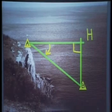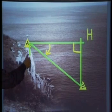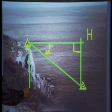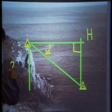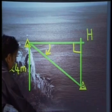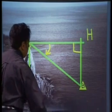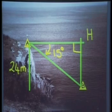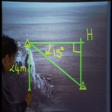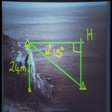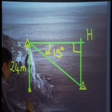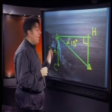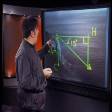Let's fill in what we know on our diagram. We know that the mountain where the woman sat was 24 meters high, and that the angle of depression from the mountain to the boat is 15 degrees. We need to find the length from the foot of the mountain to the boat. Let's call the point at the foot of the mountain C. Now we have a right-angled triangle A, H, B.